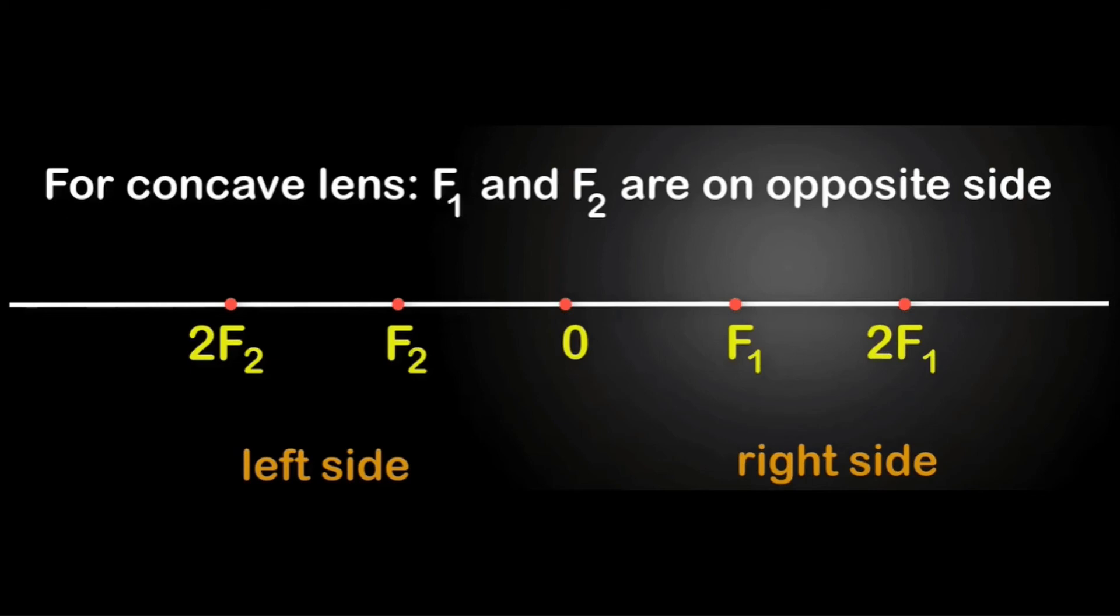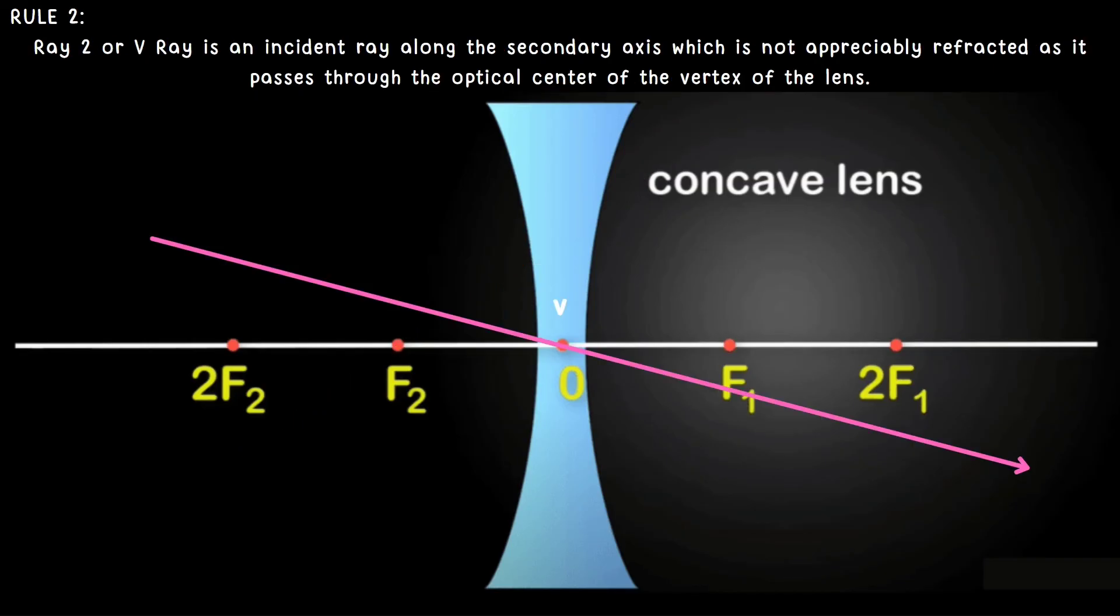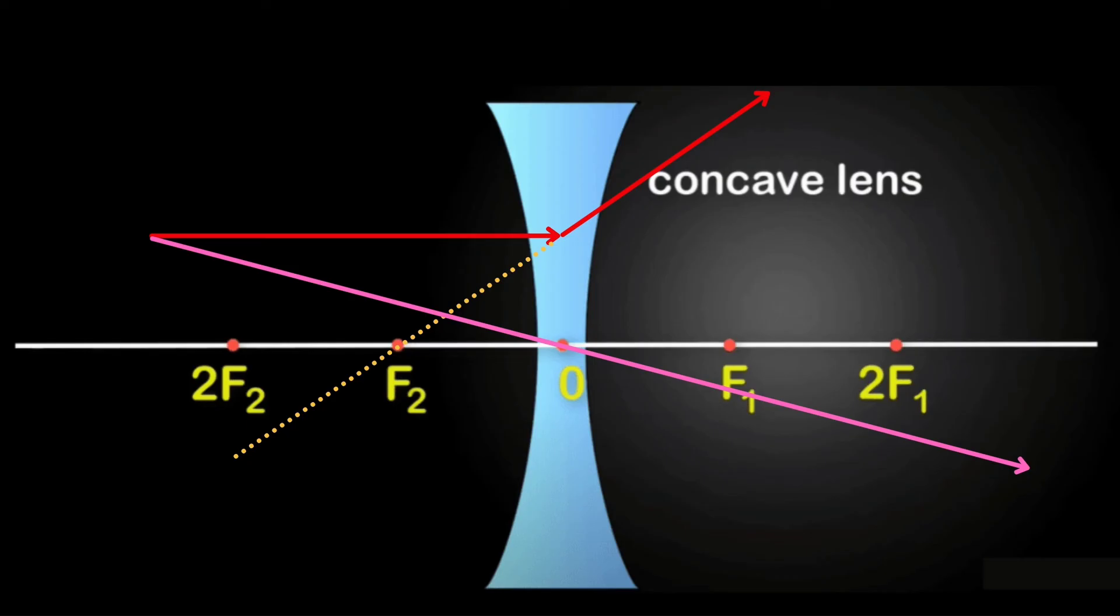If you notice, it's still the same. It's just that here we use 2F2 F2 because it needs to hit our focus or our principal foci and we also have F1 and 2F1. What is rule number one? The PF ray is an incident ray parallel to the principal axis and is refracted through the focus, and we always practice extending. Next rule is the same as the first, hitting the optical center or the vertex of the lens. And this is the complete light ray rule under concave lenses.